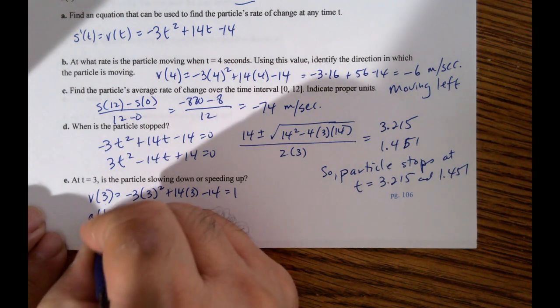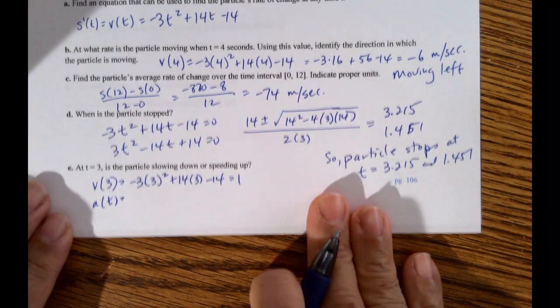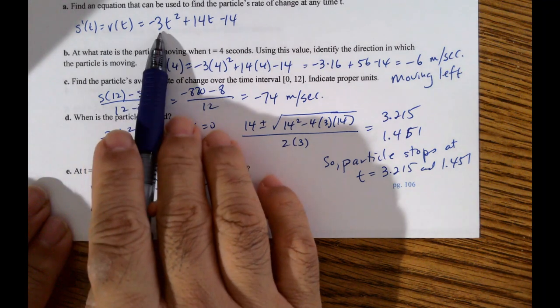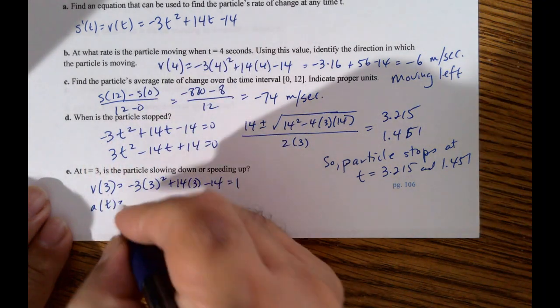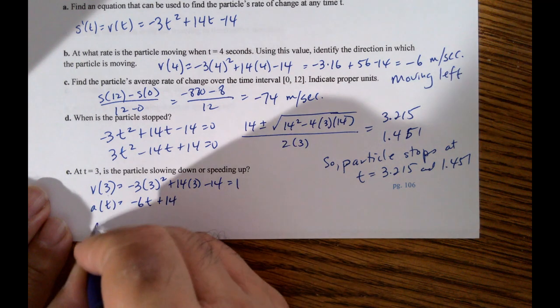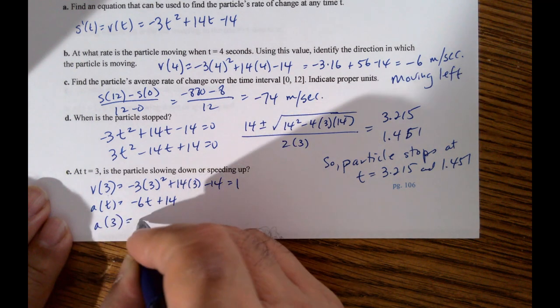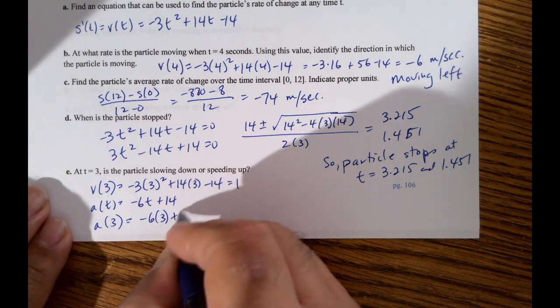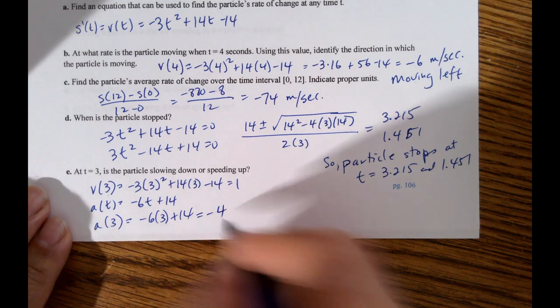And then we need the acceleration. So acceleration, I'm going to actually take the derivative of velocity first. So I'm taking the derivative of that function. So that's negative 6t plus 14. And then plug in 3. So it's negative 6 times 3 plus 14. That gives us negative 4.